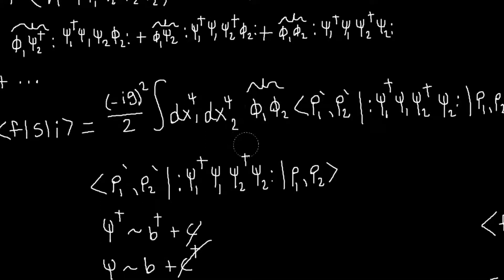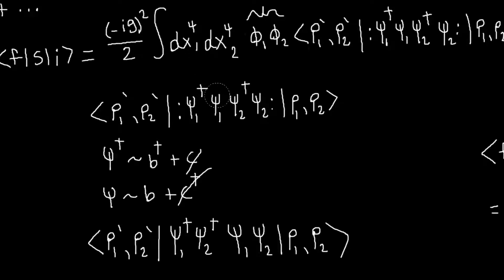And remember, for normal ordering, we just want to move all of our annihilation operators to the right. So to normal order this thing, I just need to move my psi to the right, since they contain the lowering operators.